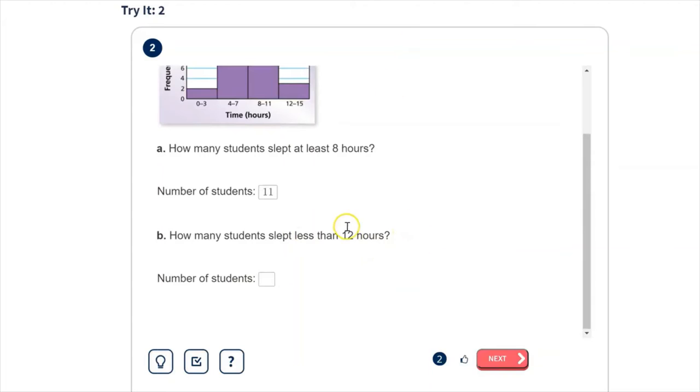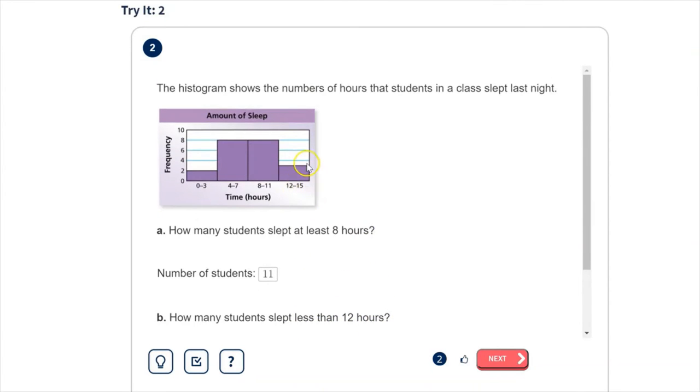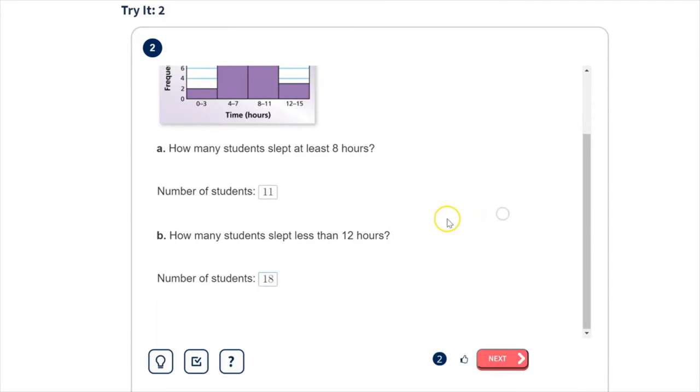The next question is, how many students slept less than 12 hours? So that would be anyone not in this category. So all three of these. So that would be 8 and 8, that's 16 and 2. So 18 students slept less than 12 hours.